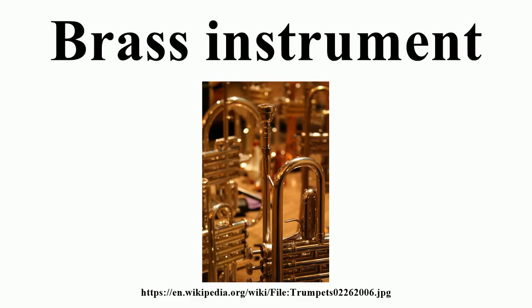Modern brass instruments generally come in one of two families. Valved brass instruments use a set of valves operated by the player's fingers that introduce additional tubing, or crooks, into the instrument, changing its overall length. This family includes all of the modern brass instruments except the trombone — the trumpet, horn, euphonium, and tuba, as well as the cornet, flugelhorn, tenorhorn, baritone horn, sousaphone, mellophone, and the saxhorn. As valved instruments are predominant among the brasses today, a more thorough discussion of their workings can be found below.